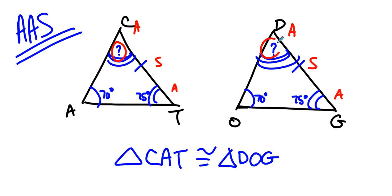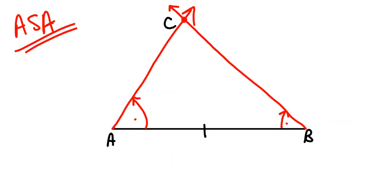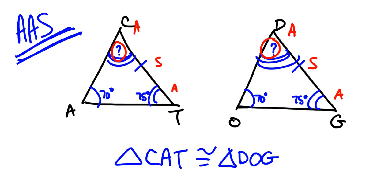Now we don't have to go to that step anymore. We have an argument that says if angle-angle-side happens, then angle-side-angle happens, and we're okay. So this picture over here confirms this picture over here. If you have two triangles where this pair of angles are congruent and that pair of angles are congruent, and any side of the triangle matches up with the corresponding side of this triangle, they've got to correspond. Angle-angle-side is a legitimate congruence theorem for exactly this reason.